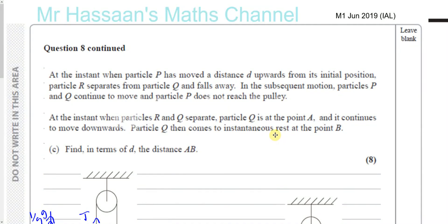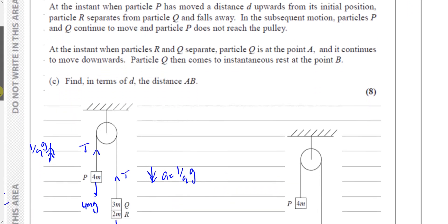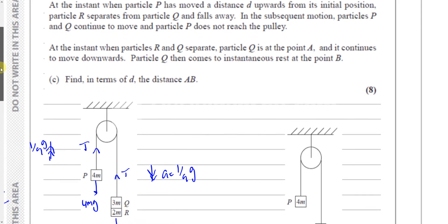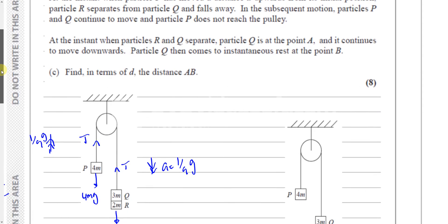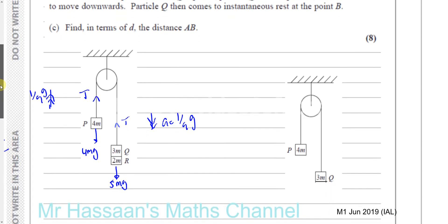Now for part C of question number 8 from M1 June 2019. In this question we are told at the instant when particle P has moved a distance D upwards from its initial position, particle R separated from particle Q and falls away. In the subsequent motion particles P and Q continue to move, and particle P does not reach the pulley. At the instant when particles R and Q separate, particle Q is at the point A and continues downwards, then comes to instantaneous rest at the point B.